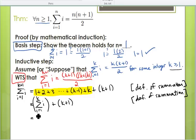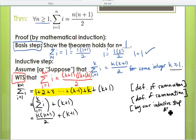K times k plus one over two, and then we still have this plus k plus one here. And then this is really important, this is by our inductive assumption.